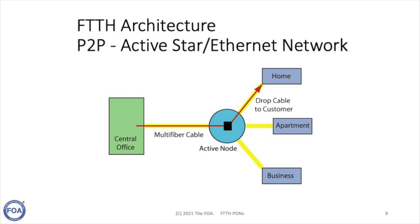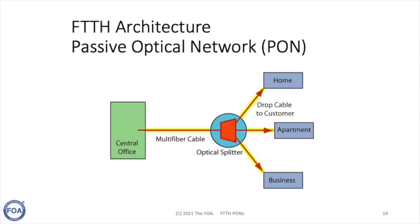Another option for fiber to the home is an active star or Ethernet network, basically like a local area network in an enterprise. You have a central office talking to an active node — an Ethernet switch — which then connects to individual subscribers. The downside is that the active node requires space, electronics, power, uninterruptible power, and service. A better way to do it is called a passive optical network, where we replace that active node switch with a fiber optic passive splitter.